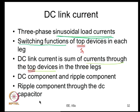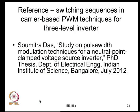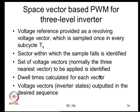From the space vector point of view, rather than providing three-phase sinusoidal references we consider the reference as a rotating voltage reference vector revolving at fundamental frequency omega, with amplitude proportional to the desired fundamental voltage. This is sampled once per sub-cycle Ts, similar to two-level space vector PWM. You then identify the sector within which the sample falls — same as for two-level inverter — but the key difference is identifying the set of voltage vectors to apply.